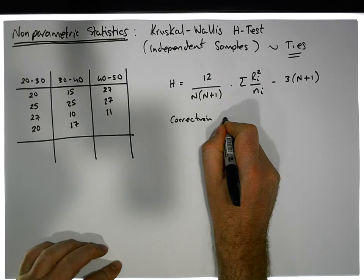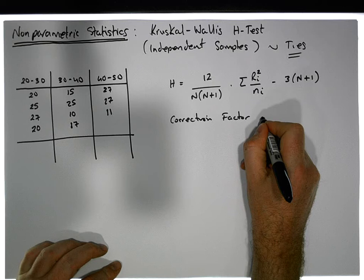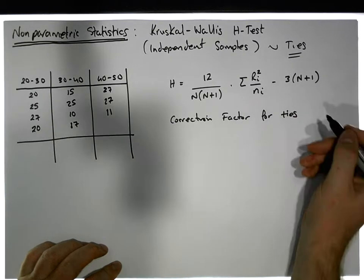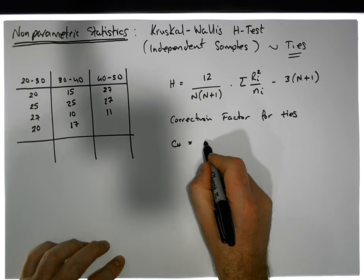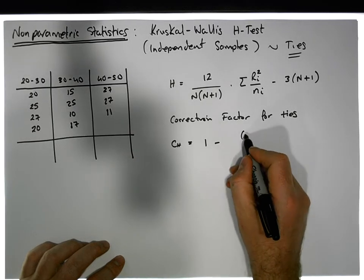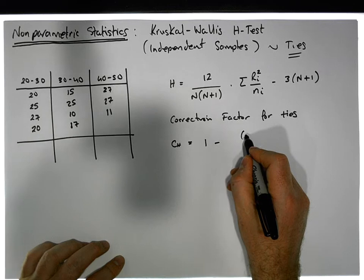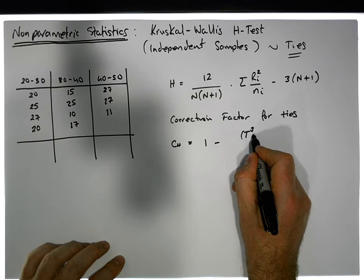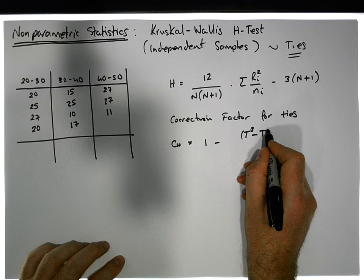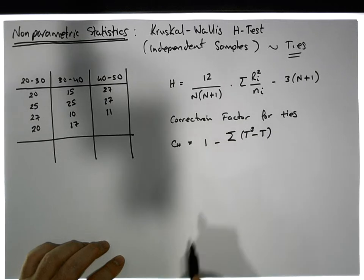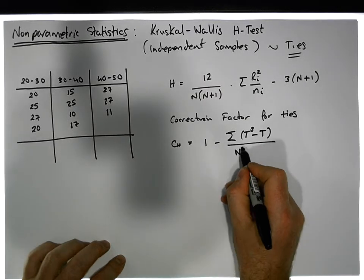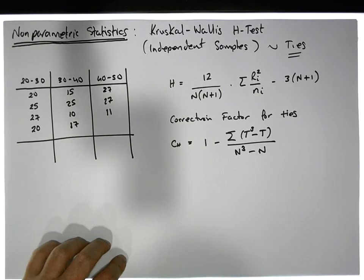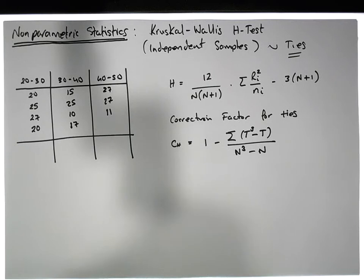But there's a correction factor for ties in the data set. The correction factor C_H equals one minus the sum over each group of ties of (t cubed minus t) — where t is the number of tied values in that group — all divided by N cubed minus N, where N is the total number of observations in the data set.